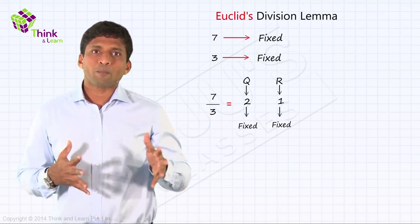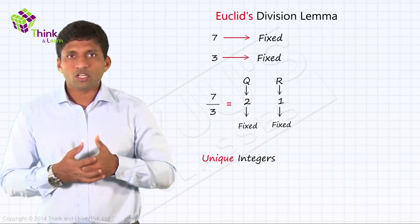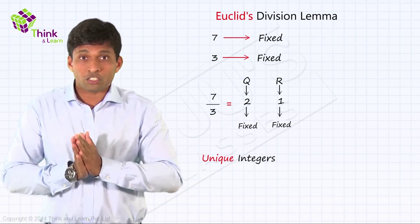That is why the word unique integers is used in this explanation. Because there will be only one set of solutions, it's very easy to understand. I hope you are getting it.